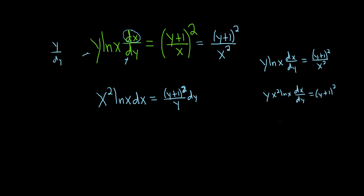And then you could multiply by dy. So we get y x squared ln x dx equal y plus 1 squared dy. Then you could divide by y. So you would have x squared ln x dx. I feel this is much more confusing than doing it in one step.